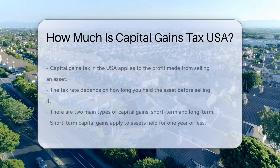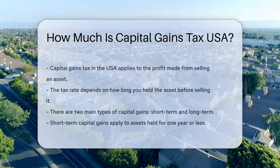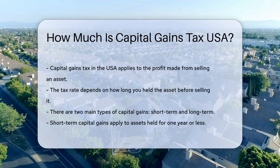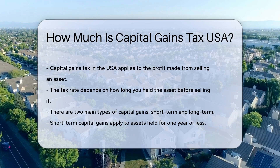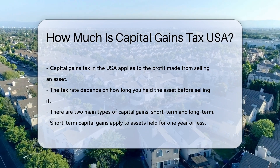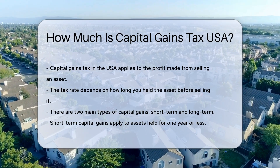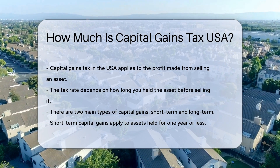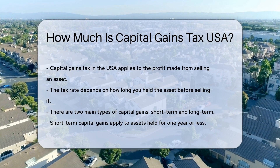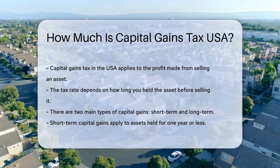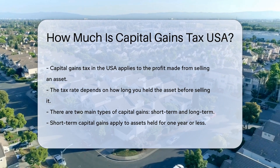Capital gains tax in the USA applies to the profit made from selling an asset. The tax rate depends on how long you held the asset before selling it. There are two main types of capital gains: short-term and long-term.